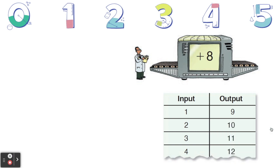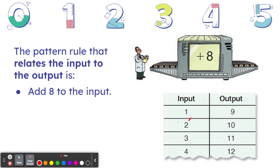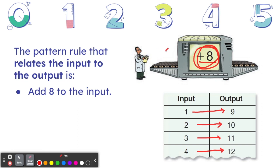Now we can use an input output machine to make a growing pattern. Have a look. If we use this input output machine to make a growing pattern, we see that the rule here is plus eight. This machine adds eight to each input to get the output. The pattern rule that relates the input to the output is add eight to the input. So when we move from our input to our output, we are adding eight: one plus eight makes nine, two plus eight makes 10, three plus eight makes 11, four plus eight makes 12. So the rule appears in our input output machine — whatever is in this machine, we do to the input in order to get the output.